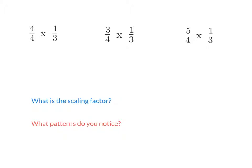When you look at these three multiplication problems — 4 fourths times 1 third, 3 fourths times 1 third, and 5 fourths times 1 third — we see pairs of factors. To figure out which is the scaling factor, look at which factor is the same in all three problems. That's 1 third. So 4 fourths, 3 fourths, and 5 fourths are the scaling factors. Underline 1 third in each problem — we'll compare how the scaling factor changes the size of 1 third in the product.